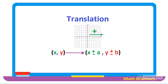When you are going to translate the figure to the right, you are going to add the value to the x coordinate. However, if you are going to translate the figure to the left, you are going to subtract it from the x coordinate. Moreover, if you are going to move the figure up, you are going to add the value to the y coordinate. Furthermore, if you are going to translate the figure down, you are going to subtract the value from the y coordinate.